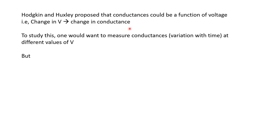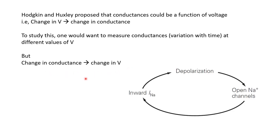The problem is that as soon as the conductance changes, it in turn affects the voltage, making it very difficult to maintain a steady voltage while the conductances are changing. For example, a sufficiently large depolarization causes sodium channels to open, sodium ions flow inward, making the membrane potential even more positive, which causes further opening of sodium channels. Because the membrane potential is continuously changing, it is difficult to measure sodium conductance as a function of voltage.